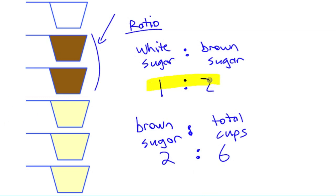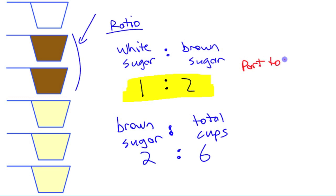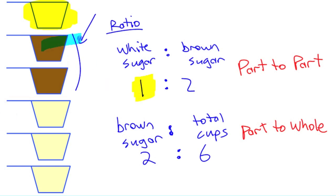This ratio up here, this first one, this is called a part to part ratio. Part to part ratio. Whereas this one down here is called a part to whole ratio. Not a hole in the ground, a whole like the entire thing. When we're looking up here, this is comparing this part right here to this part right here. Part of the group to part of the group. That's why it's called a part to part ratio.